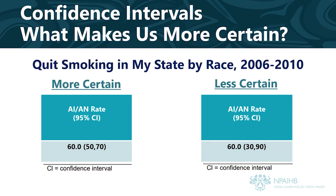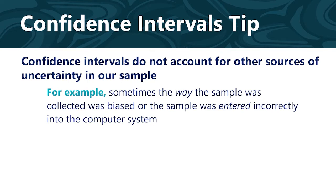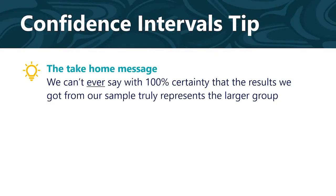That being said, there are some cases where a rate gives you valuable insight even if the confidence interval is large. Confidence intervals do not account for other sources of uncertainty in our sample data. For example, sometimes the way the sample was collected was biased, favoring one type of person over another. Or sometimes the data collected from the sample was entered incorrectly into the computer system. So we can't ever say with 100% certainty that the results we got from our sample really, truly represents the larger group. That's just life. But looking at confidence intervals and understanding the way that data were collected can help.